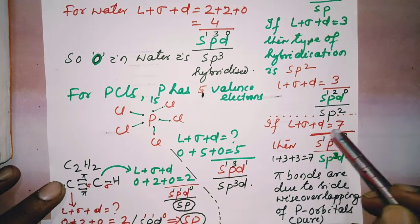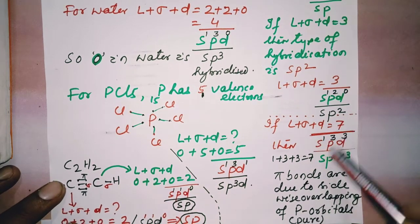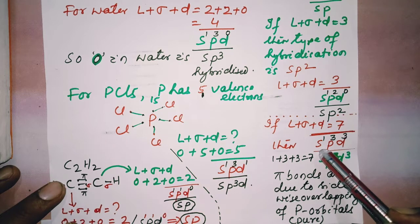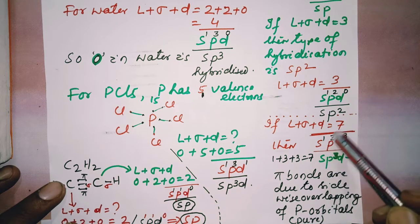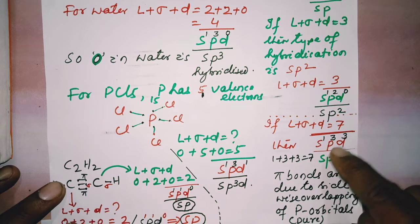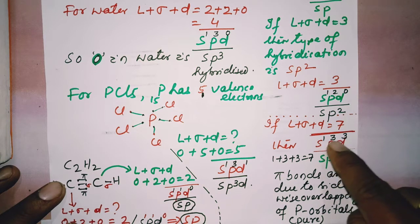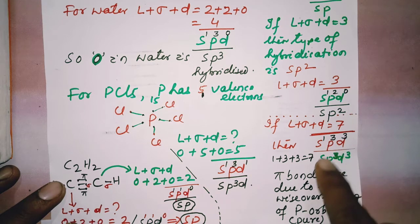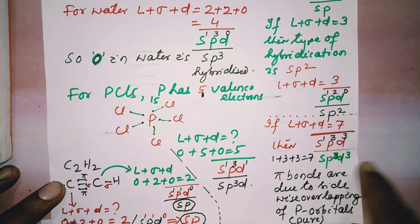If L plus sigma plus D equals 7, then the hybridization is SP³D³. S takes 1, P takes 3 (1+3=4), and 7 minus 4 equals 3, so D takes 3. The type of hybridization is SP³D³.